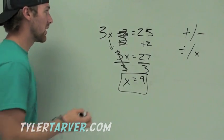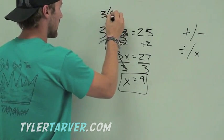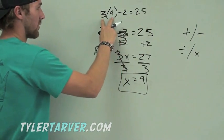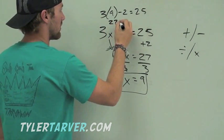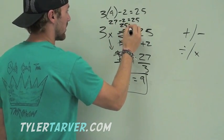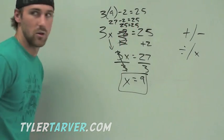If we want to check, we can plug it back in. 3 times 9 minus 2 equals 25. 3 times 9 is 27. 27 minus 2 is 25. 25 equals 25. Wonderful.